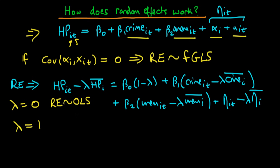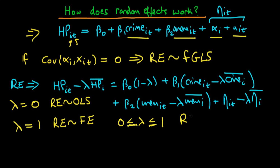Similarly, if lambda equals one, then this random effects transformed system is actually exactly equivalent to the fixed effects estimator. To see that, just replace lambda with one and you'll notice it's exactly the same as the fixed effects estimator — if that's not immediately clear, go back and look at the fixed effects video. Typically, however, lambda is between zero and one, and in that circumstance random effects is not equivalent to either pooled OLS or fixed effects estimation.